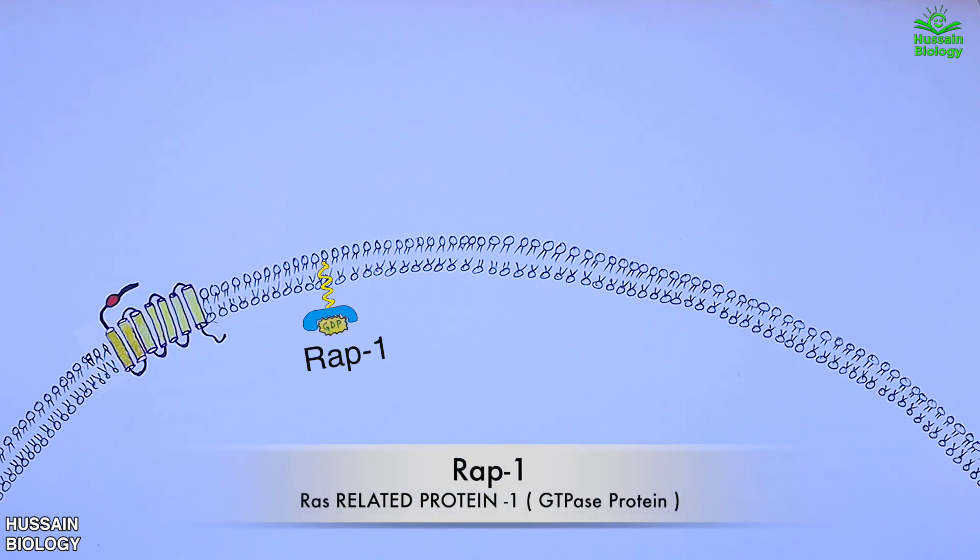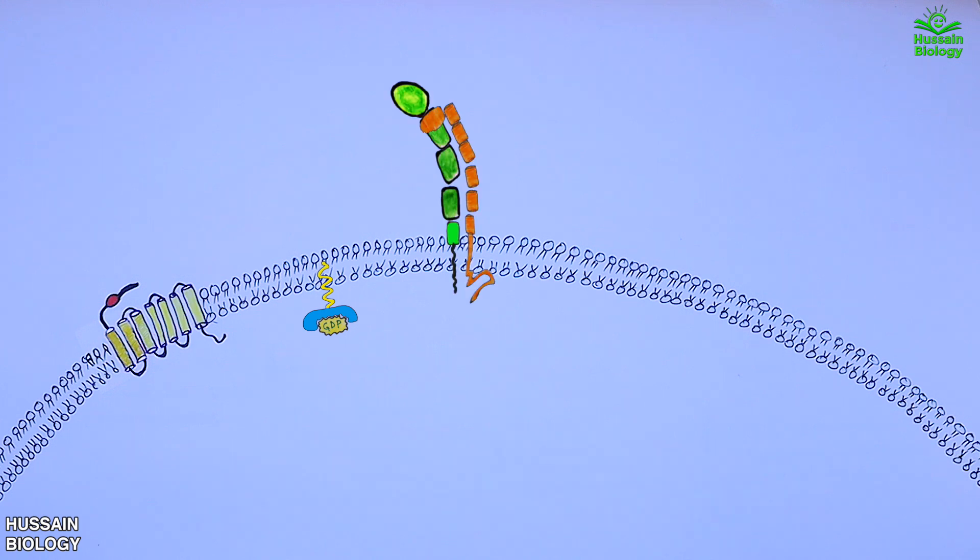It must be noted here that it is the inactive form of RAP1 protein. Then we also have integrin molecule in the membrane in its inactive state, that's bent conformation. Furthermore, we also have some molecules like RIAM molecule, inactive talin, and kindlin molecule.